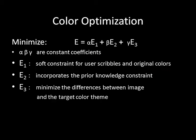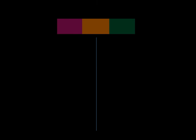Our color optimization solver consists of three energy terms. The first term includes soft color constraints defined by user scribbles or original colors of the image. The second term incorporates learned prior knowledge to ensure naturalness and realism. The third term steers the composition of the image toward the desired color theme. In the following, let us show the importance of each term through comparisons.